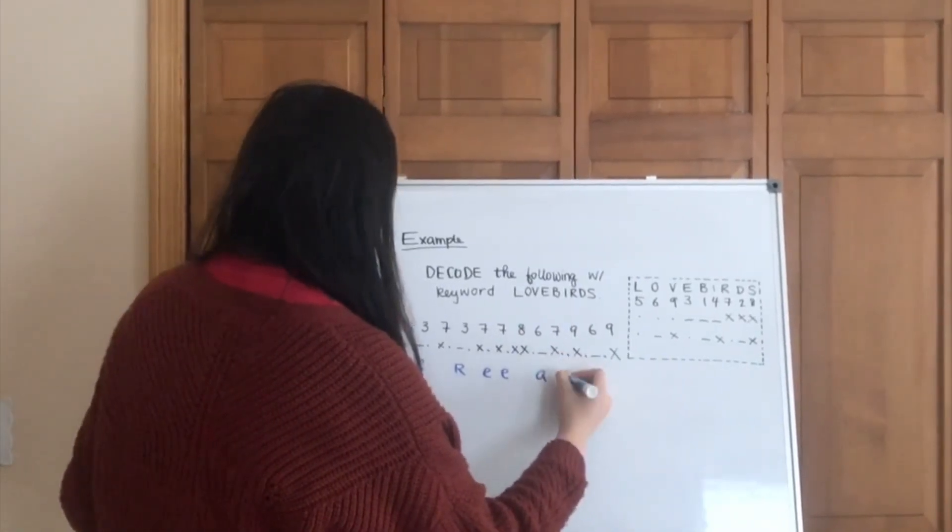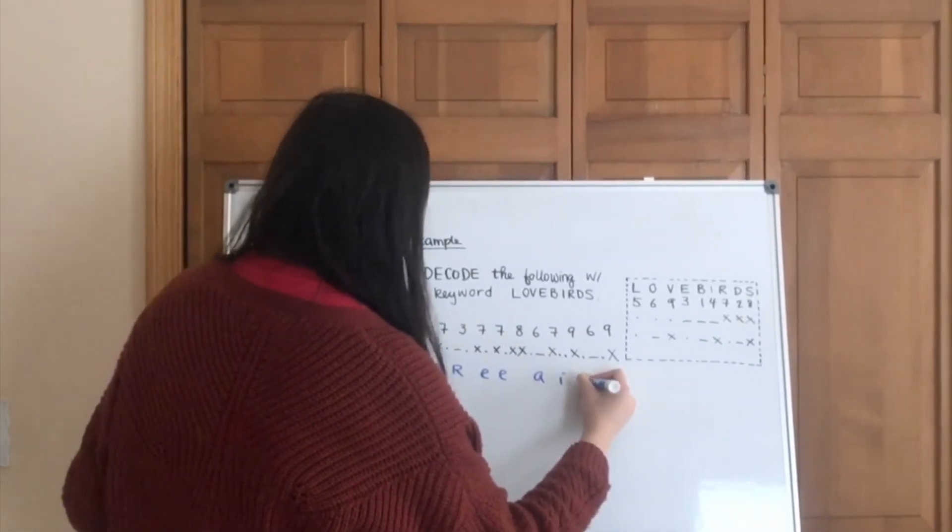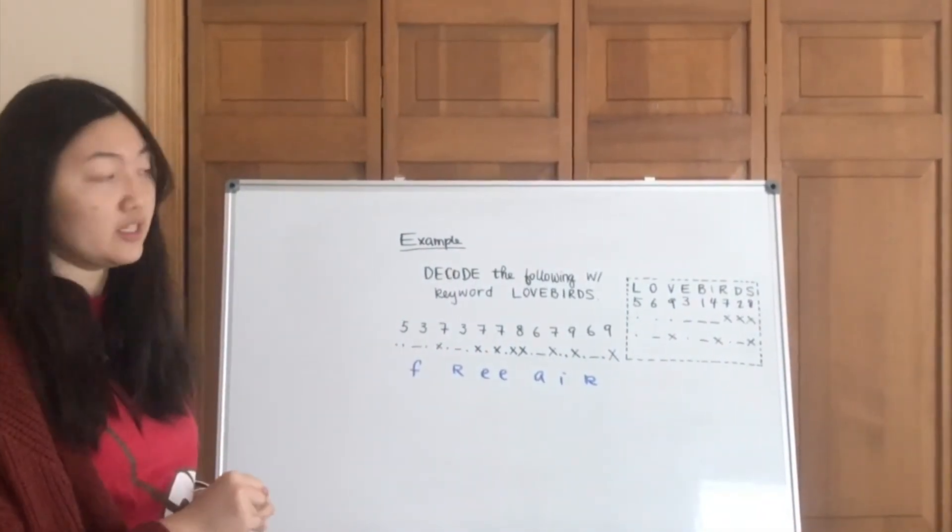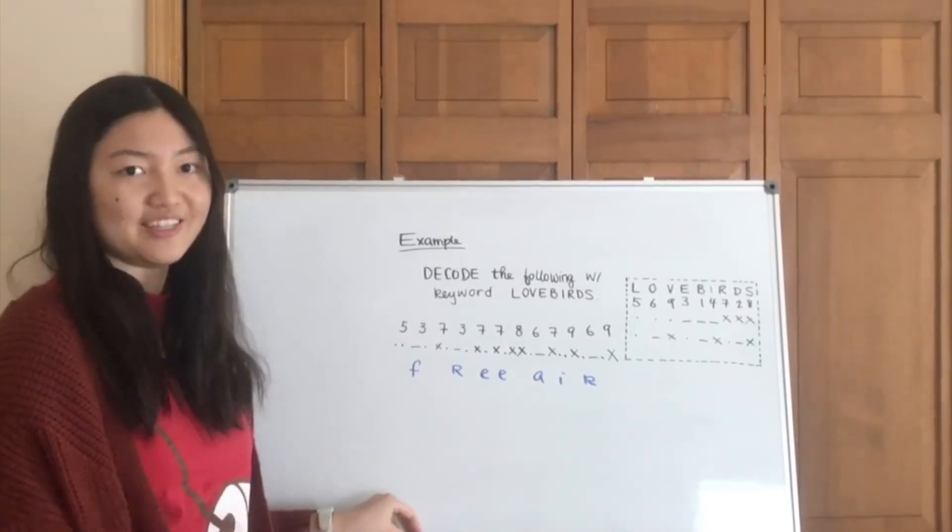A double dot is I, and the last part is C E. Free I C E. Makes sense? And this is how you decode knowing the keyword. Free ice.